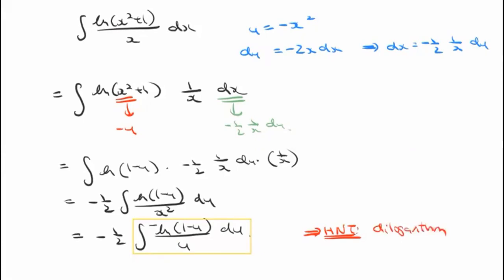This integral of -ln(1-u)/u gives the dilogarithm, written as Li₂(u). Substituting back u = -x², the sub-problem result is: -(1/2)·Li₂(-x²). This is the red section from the previous page, and since we've now handled that, we've essentially finished the problem and just need to put everything back together.